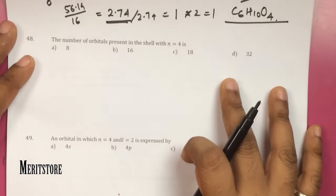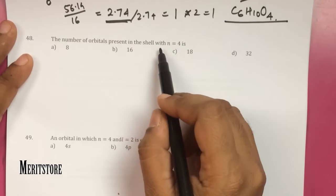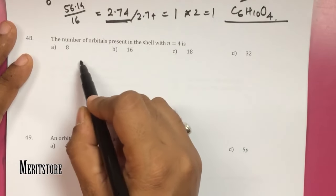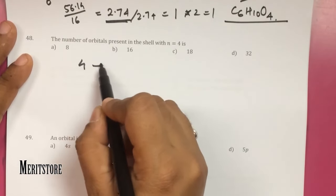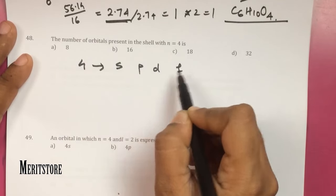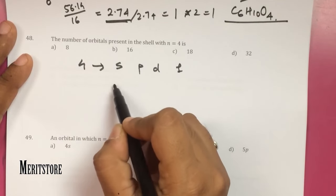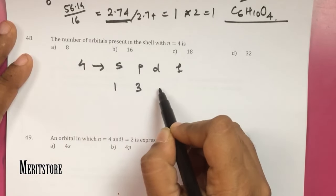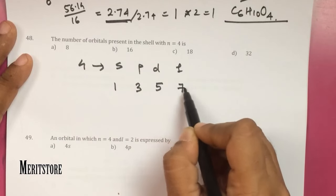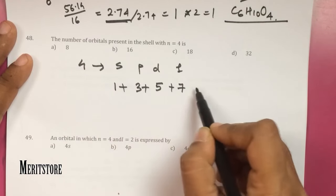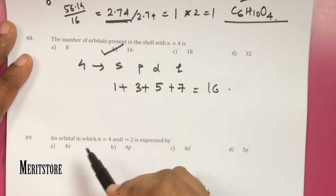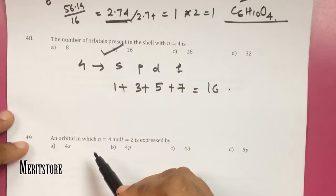Question number 48: the number of orbitals present in the shell where n = 4. In the fourth shell, we have 4 subshells: s, p, d, and f. S has 1 orbital, p has 3, d has 5, and f has 7. The total is 16, so option B is correct.